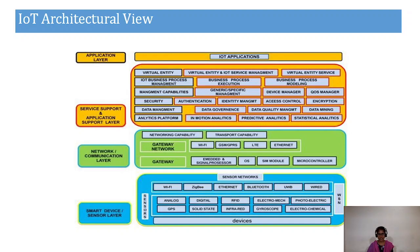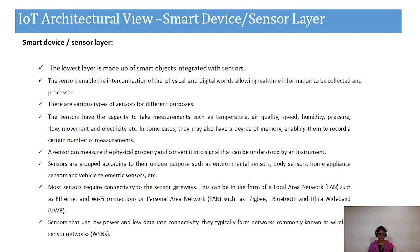The sensor layer contains the sensor networks, and the network and communication layer contains the transport layers. The service support and application layers contain the IoT applications. The sensor layer is the lowest layer — it is integrated with sensors, and those sensors interconnect with physical and digital environments using real-time information.